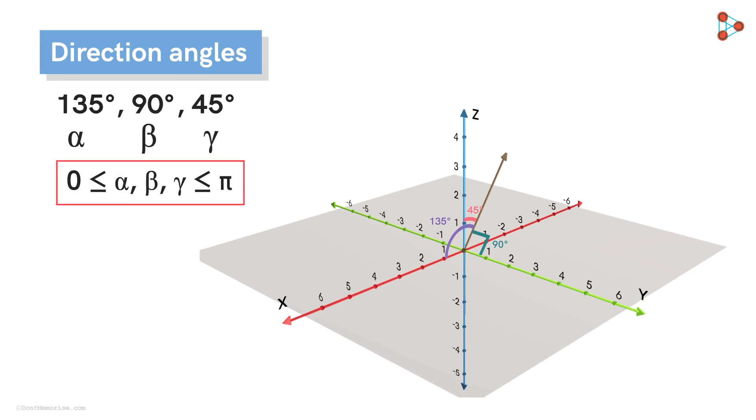So these examples were taken just to show you that a direction angle can be acute, obtuse, or a right angle.